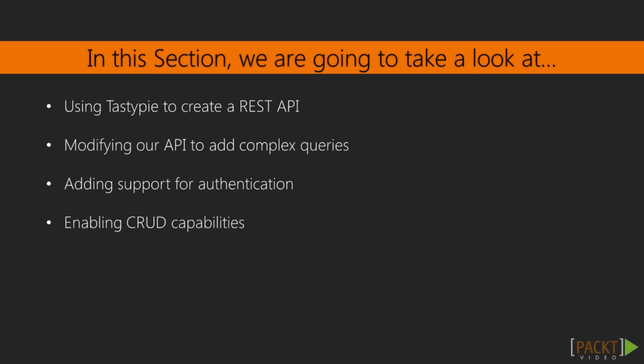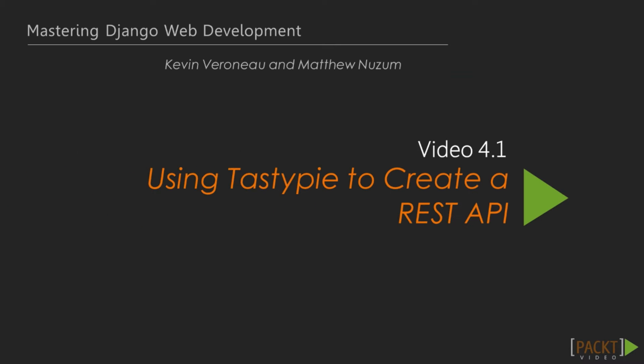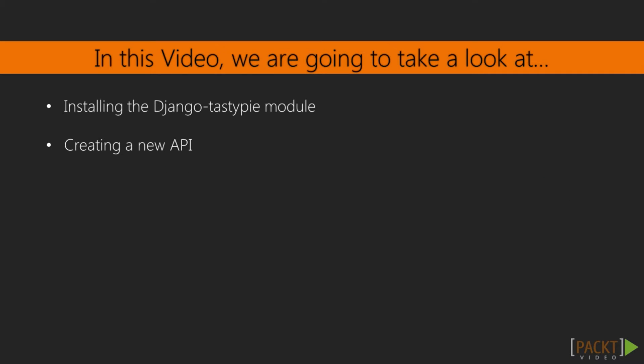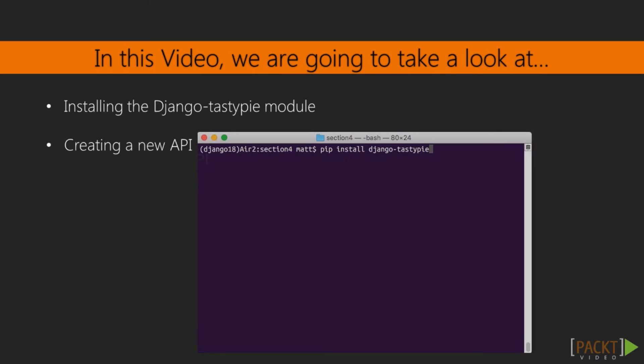We'll introduce TastyPie and how it will expose your models as REST resources. Then we'll add some additional data and query options to our API, and then add authentication so that we can do create, read, update, and delete methods on our data. First, we'll install TastyPie and create a basic API. This is an add-on module for Django that makes it easy to add an API.